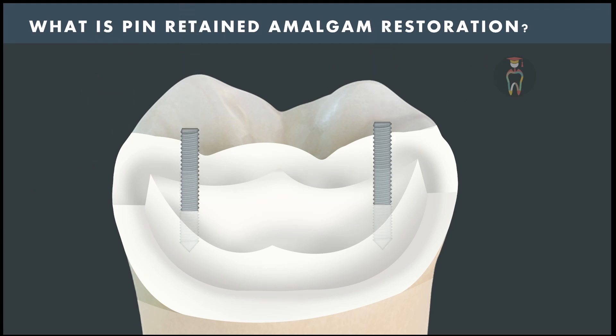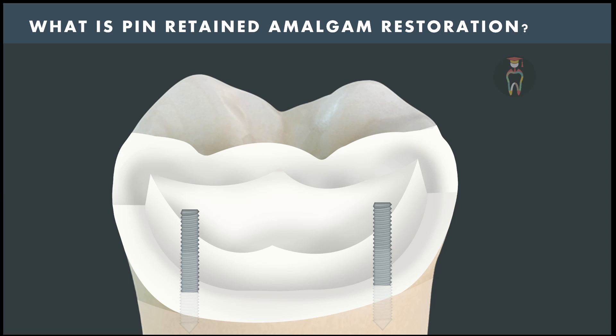First of all, we have to understand what is pin retained amalgam restoration. It is a type of amalgam restoration in which pins are placed in the tooth surface in order to provide added retention. Imagine a tooth which is grossly destructed with no sufficient tooth structure remaining to provide adequate retention for the amalgam restoration — in those situations we place pins in the sound tooth structure to aid in providing a retentive feature for the amalgam.